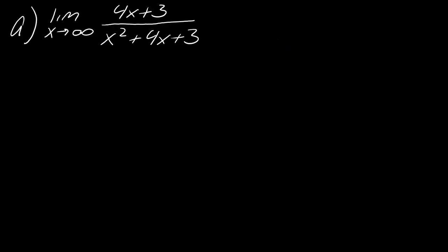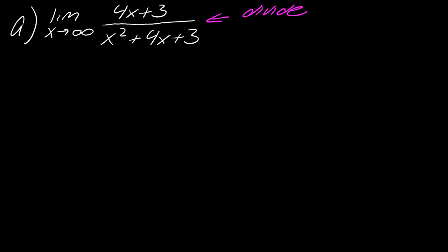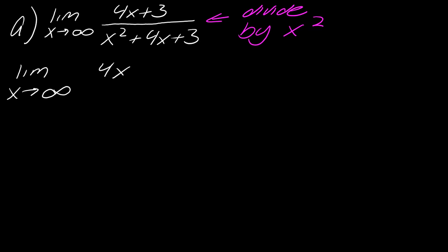Let's start with the basic examples. There are really three different things that can happen with basic rational expressions. In this first case, notice that the term of highest degree is in the denominator. So you want to divide everything by the highest power of x — in this case, x squared. Let me write that out.